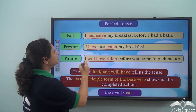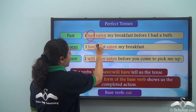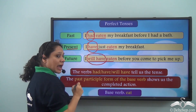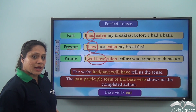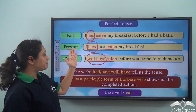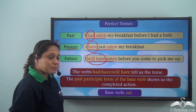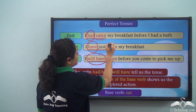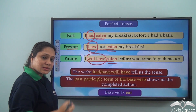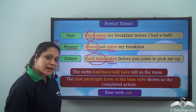The words had, have, and will have are actually showing us the tense — whether it is in the past, present, or future. The past participle form eaten, which is common in all three sentences, is showing us the completed action.